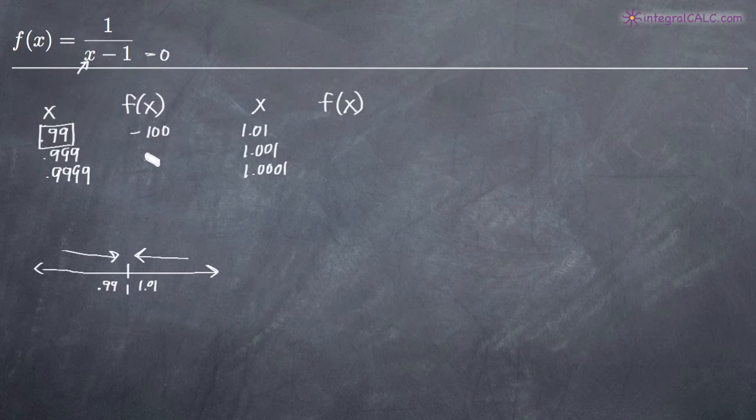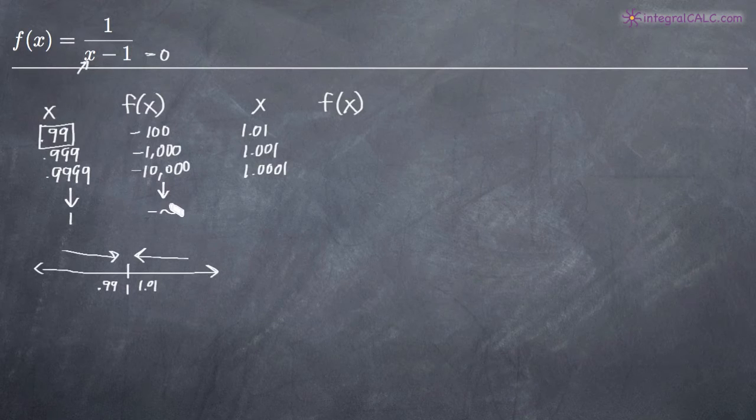If we plug in 0.999, we'll get negative 1,000. Plugging in 0.9999 gives us negative 10,000. So as you can see, this is moving toward the value 1 and this is moving toward the value negative infinity.